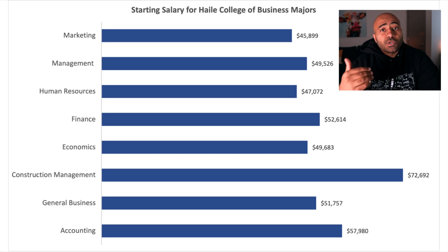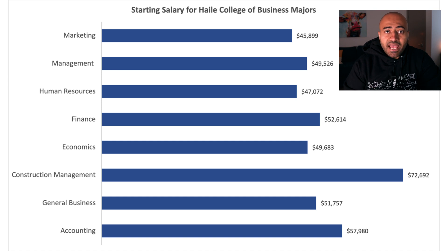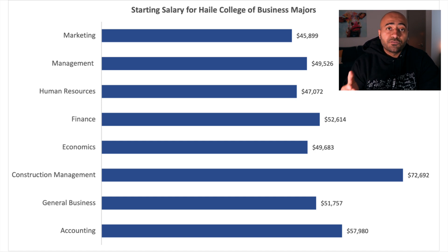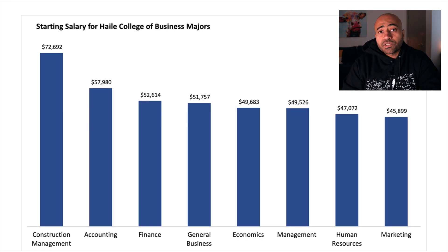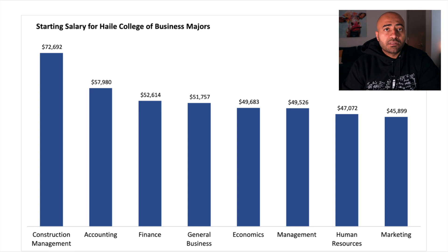Step 5, drop the cents. It's a level of precision that we don't really have in our data, but adding cents makes it seem as if we are precise. Step 6, change this to a bar chart — it's easier to see. Also, sort the majors from highest to lowest.